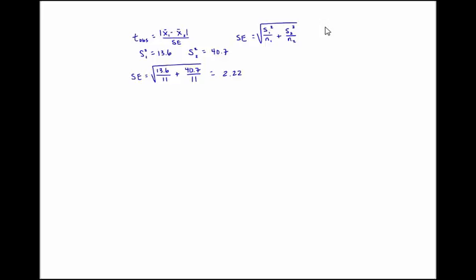So now I'm almost done. Now I just have to plug that in to my t observed equation. So I need to take the absolute value of the difference between the means. Remember mean one was 93, mean two was 88. I need to divide by my standard error. And once I do that, I get 2.25.